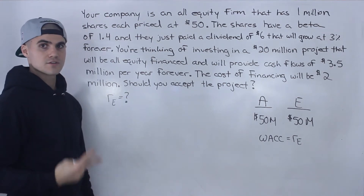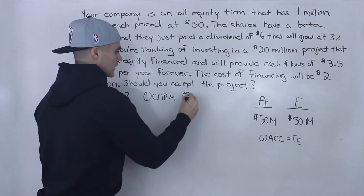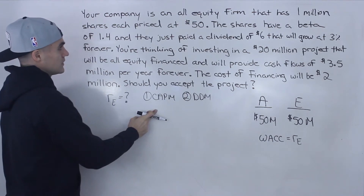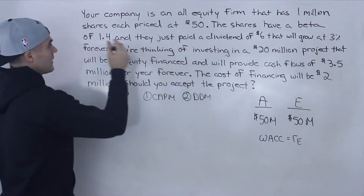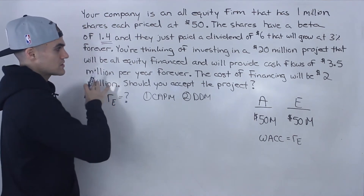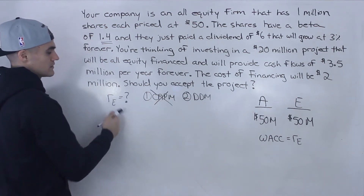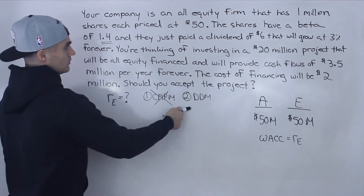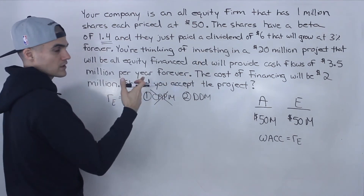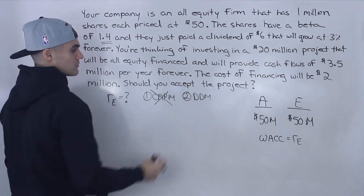There are two ways to calculate the return on equity: the capital asset pricing model or the dividend discount model. The question gives information for both, but for the CAPM we'd need the risk-free rate and the market risk premium — neither is provided. So we can't use the CAPM. For the dividend discount model, we're given the share price, the dividend just paid, and the growth rate — enough to solve for RE.